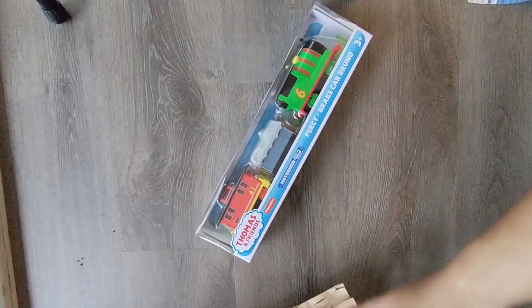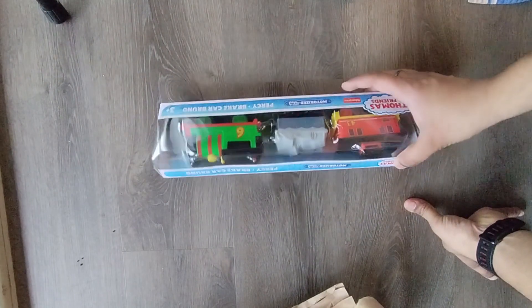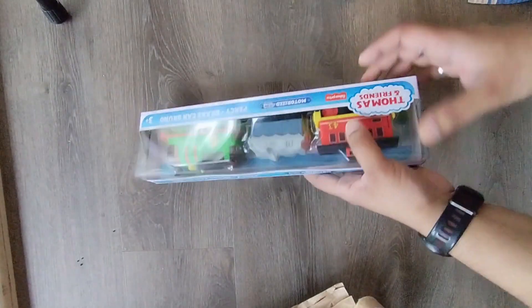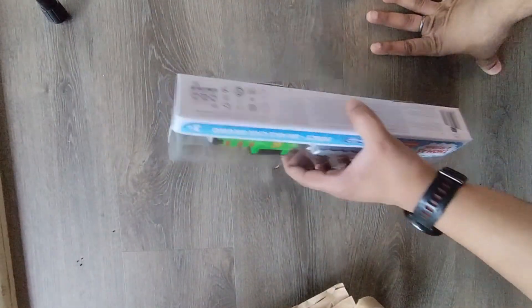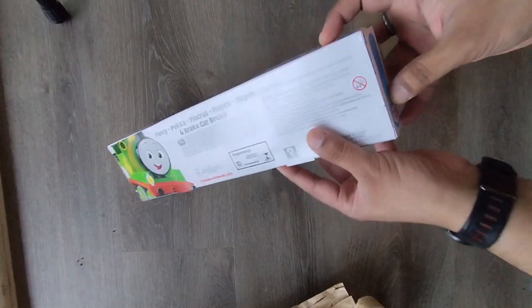Firstly, I appreciate the motorized feature of Percy, which adds an extra level of excitement and engagement to playtime. The train moves smoothly on the tracks and is easy to operate, making it suitable for children aged 3 years and above. The battery powered engine provides a realistic and interactive experience for young Thomas & Friends fans.